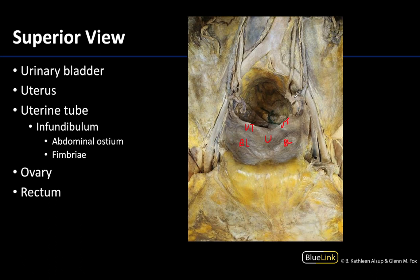You can see the infundibulum stretching out into this region and the fimbriae associated with that distalmost portion. At the very end is the abdominal ostium — not very clearly visible in this image but that is where the uterine tube opens into the abdominal pelvic cavity. You can also see the ovary on the left side, again very closely associated with the uterine tube and the fimbriae of the infundibulum. The uterus, uterine tubes, and ovaries are all intermediate in the pelvic cavity.